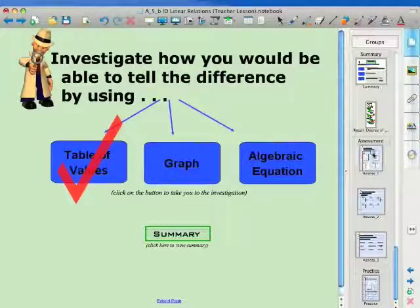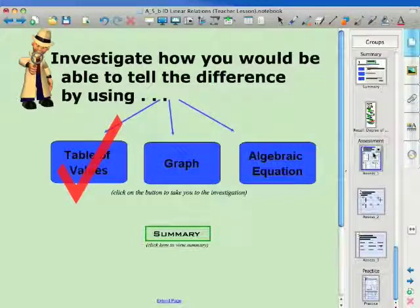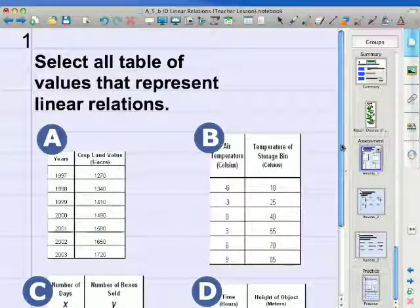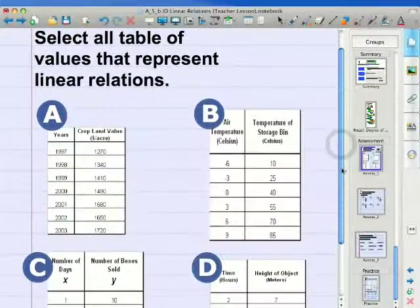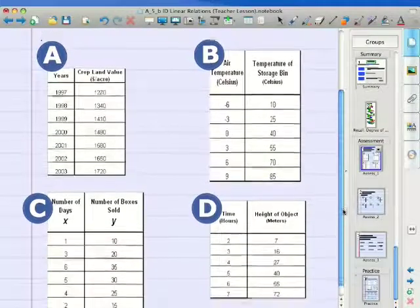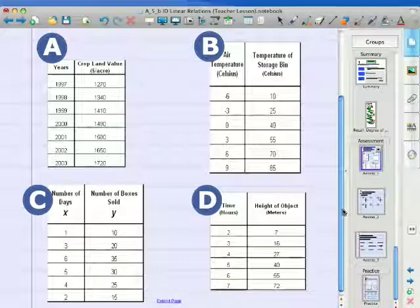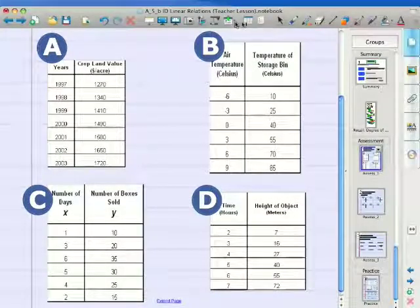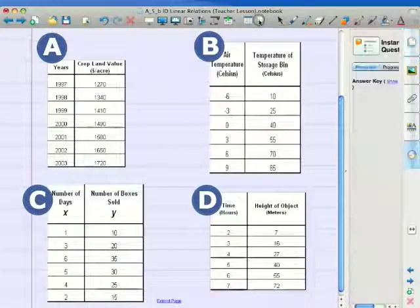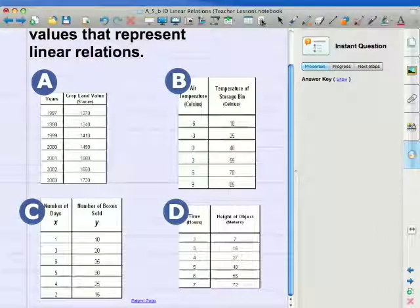So what I have set up is a slide which has a quick assessment question, and the students will have to select all that represent a linear relation. I'm going to start this Ascentio question and check for students' understanding.